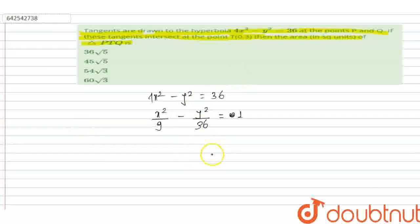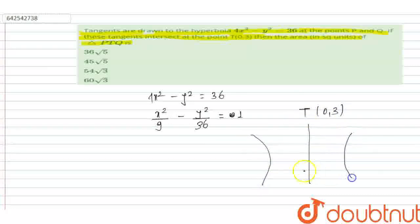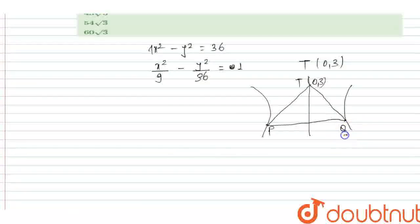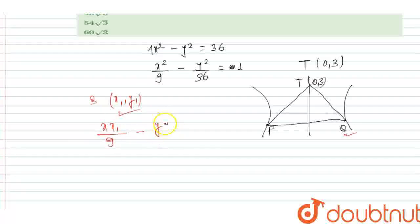Given that the tangents to the hyperbola at points P and Q intersect at point T(0, 3). Let the coordinate of Q be (x₁, y₁). Then the equation of the tangent can be written as x·x₁/9 - y·y₁/36 = 1. This tangent also passes through the point (0, 3), so it must satisfy this condition.